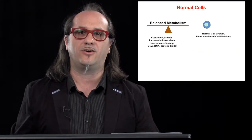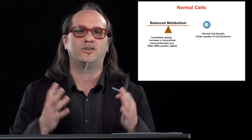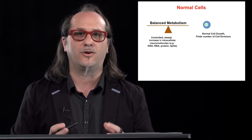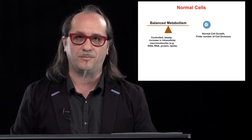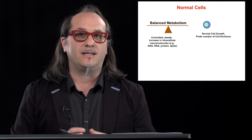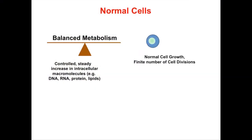This story is centered on understanding how the regulation of cell biomass, or cell growth, can be an important determinant for cancer progression. Normal cells grow in size through a balanced metabolism associated with the production of macromolecules such as DNA, RNA, and protein. This is a very well-balanced process that defines a fixed number of cell divisions.